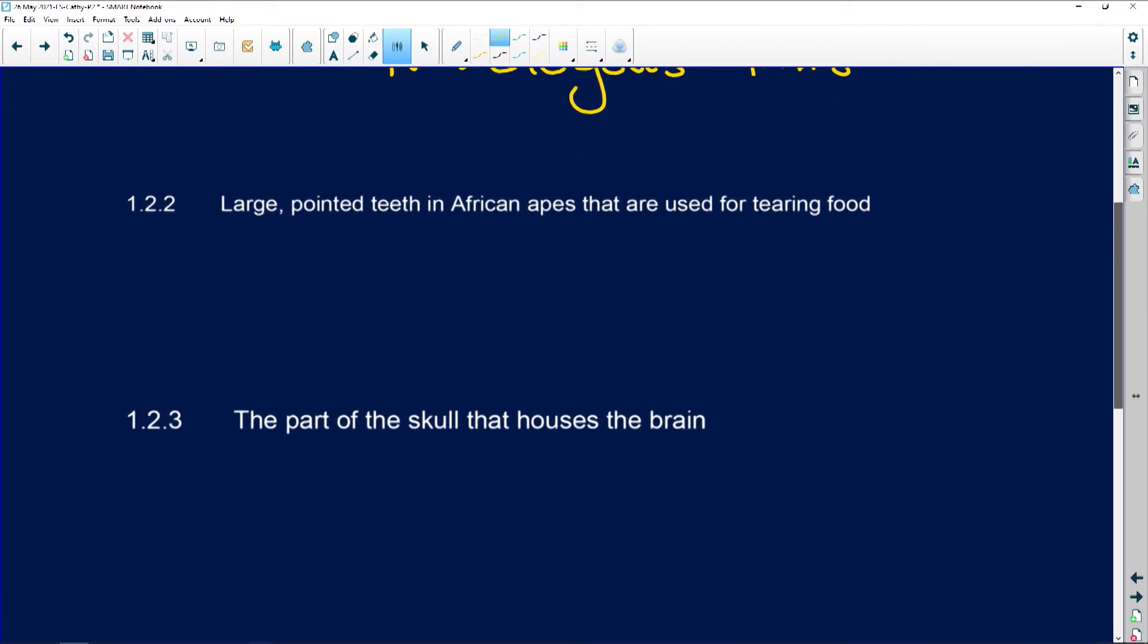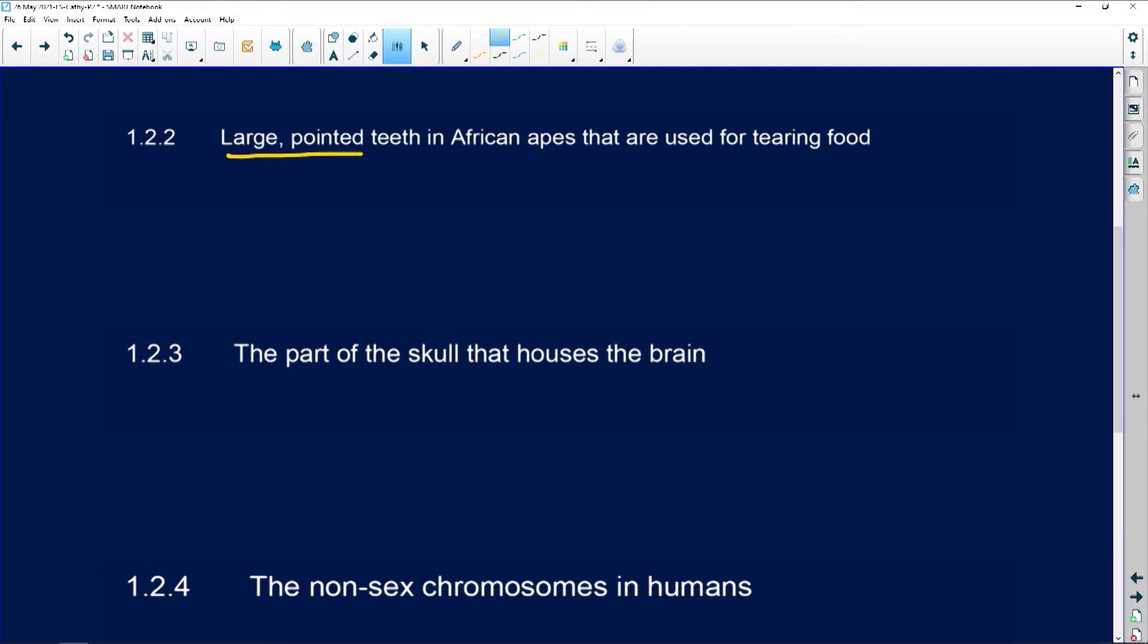Then large pointed teeth. Any large pointed teeth in African apes, and for tearing food, there's another clue, are going to be canines.